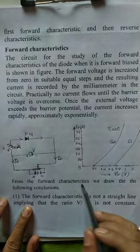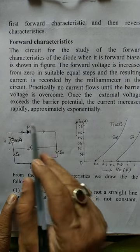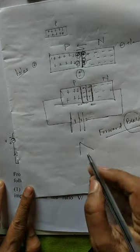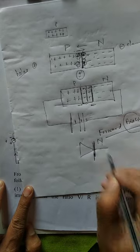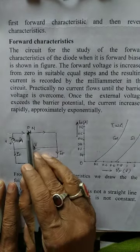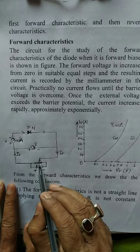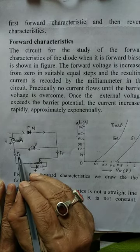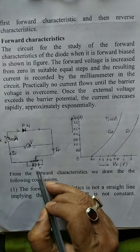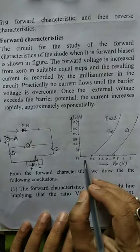Under forward characteristics, to learn what voltage corresponds to what current, we first prepare a circuit. This is the p-n junction diode. The symbol of the p-n junction diode has a perpendicular line representing the negative side and a triangular form representing the positive p-type. There is a milliammeter, a voltmeter to measure voltage, and a variable resistance. We change the voltage through the rheostat and the current is noted.